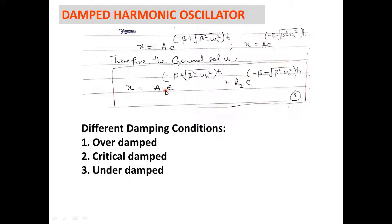In the last lecture, we derived the general solution for the damped harmonic oscillator, which is represented by equation number 3. In this lecture, we will discuss three different damping conditions: first, over-damped; second, critically damped; and third, under-damped.